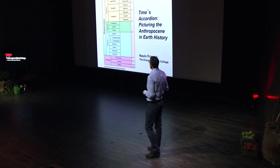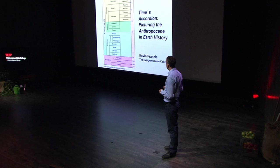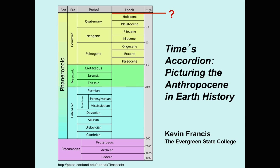Here's a typical diagram of Earth history. You can see it starts with the beginning of Earth 4.6 billion years ago and works its way to the present through the various eons, eras, periods, and epochs of geological history. The boundaries here represent major geological or biological events. For instance, the border here between the Mesozoic and the Cenozoic is the time about 65 million years ago when dinosaurs went extinct.